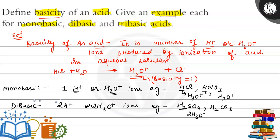That is why H₂SO₄ and H₂CO₃ are dibasic acids. Next, tribasic acids — these have three H⁺ ions, and upon ionization they give three hydronium ions.